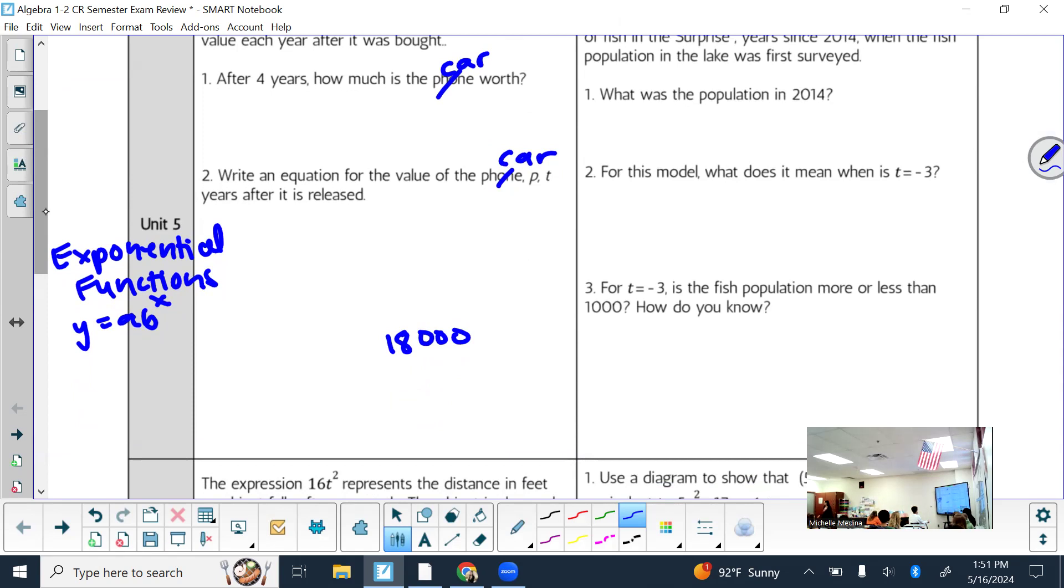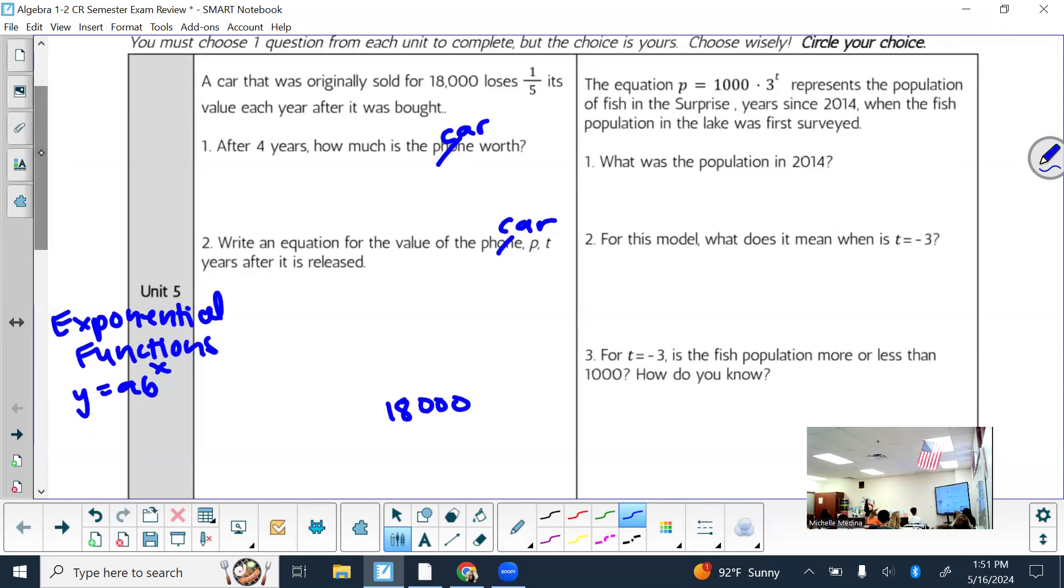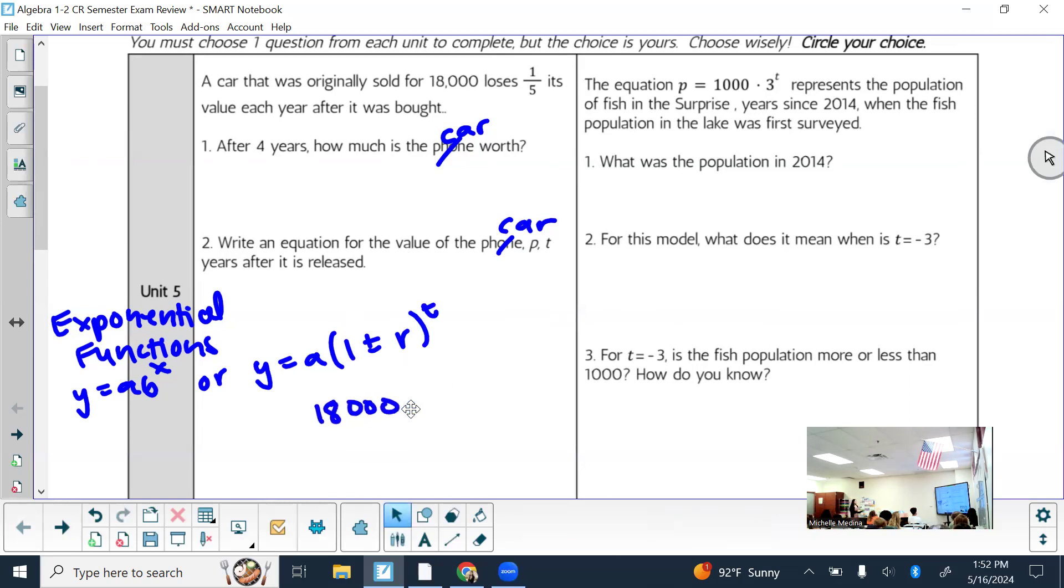Common factor. So it's what you're multiplying by each year to get the new value. So if it was doubling, then the common factor would be two. Since we are losing a fifth of its value, remember we're not multiplying by what it's losing, we're multiplying by what it's keeping. So you might want to use this variation for this problem.